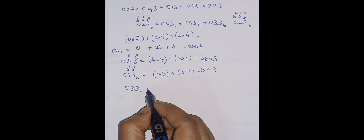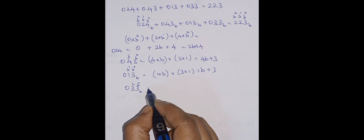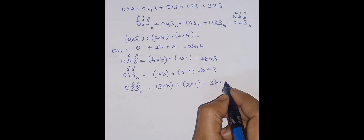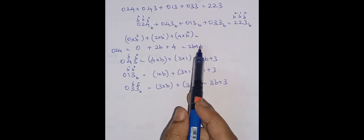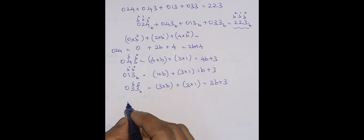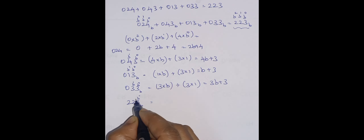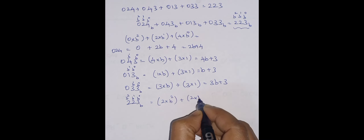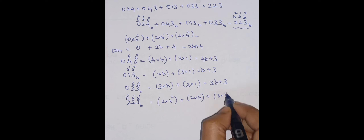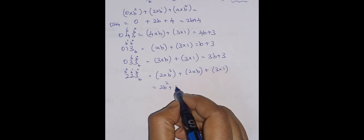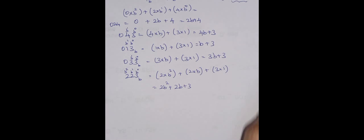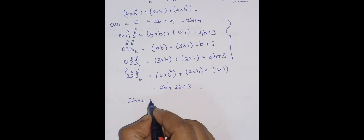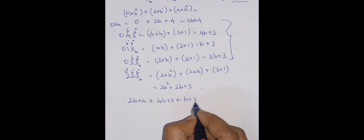For the fourth term 033, the positional weights are b power zero and b power one, so three into b plus three into one, which equals 3b plus 3. Now for the right-hand side 223 base b, the positional weights are b naught, b one, and b two, giving two into b squared plus two into b plus three, which equals 2b squared plus 2b plus 3.